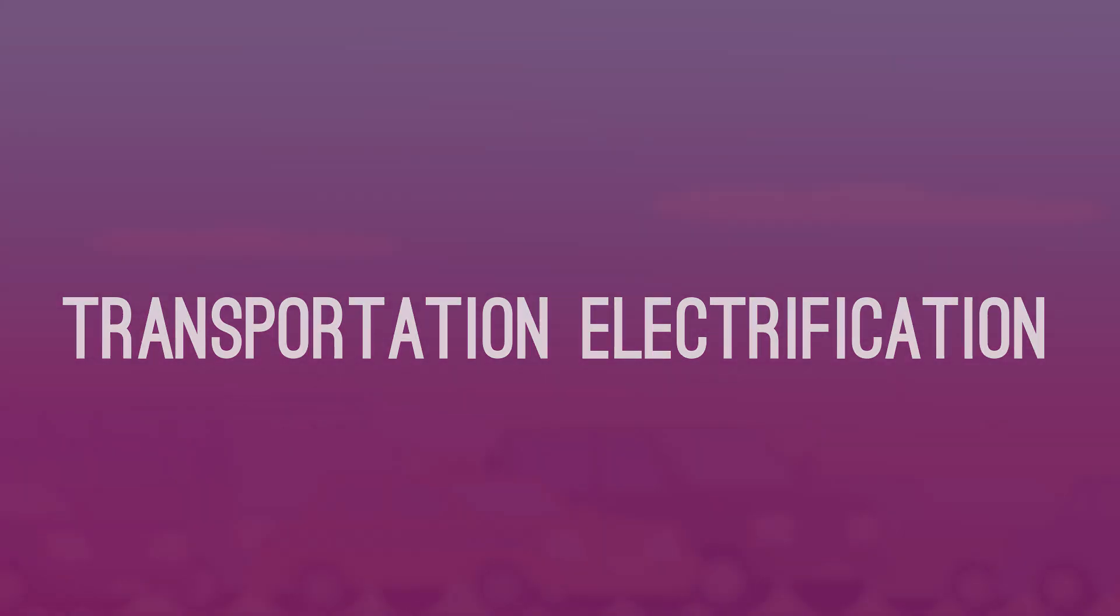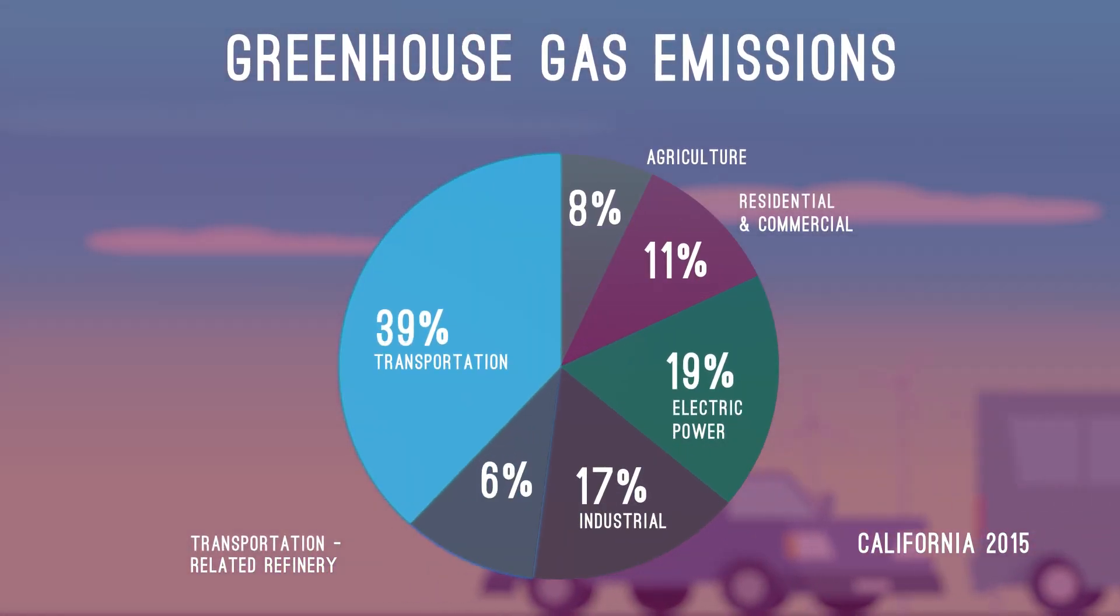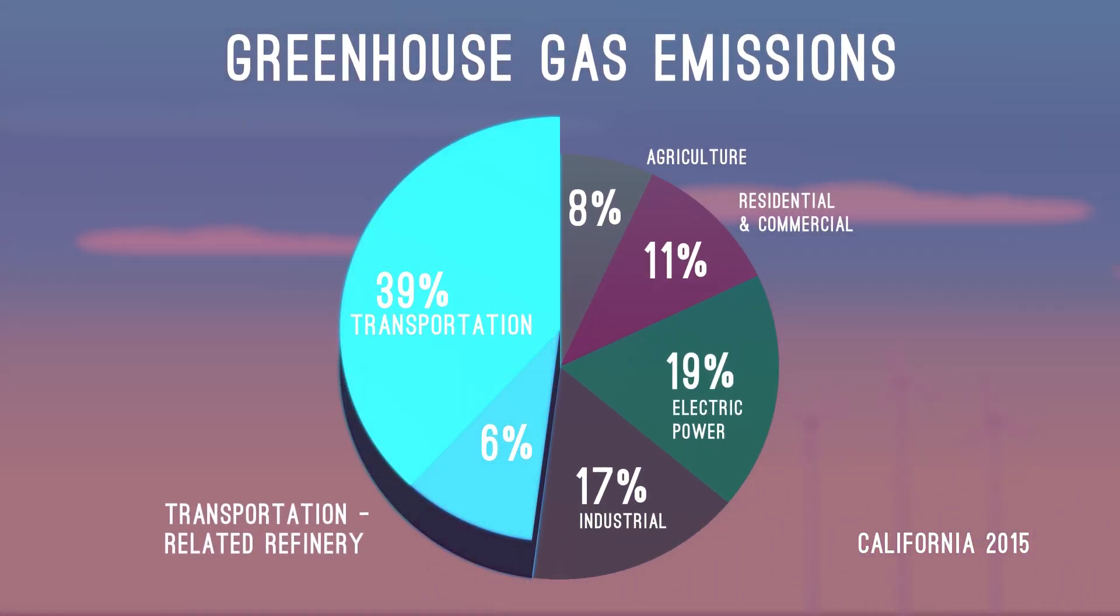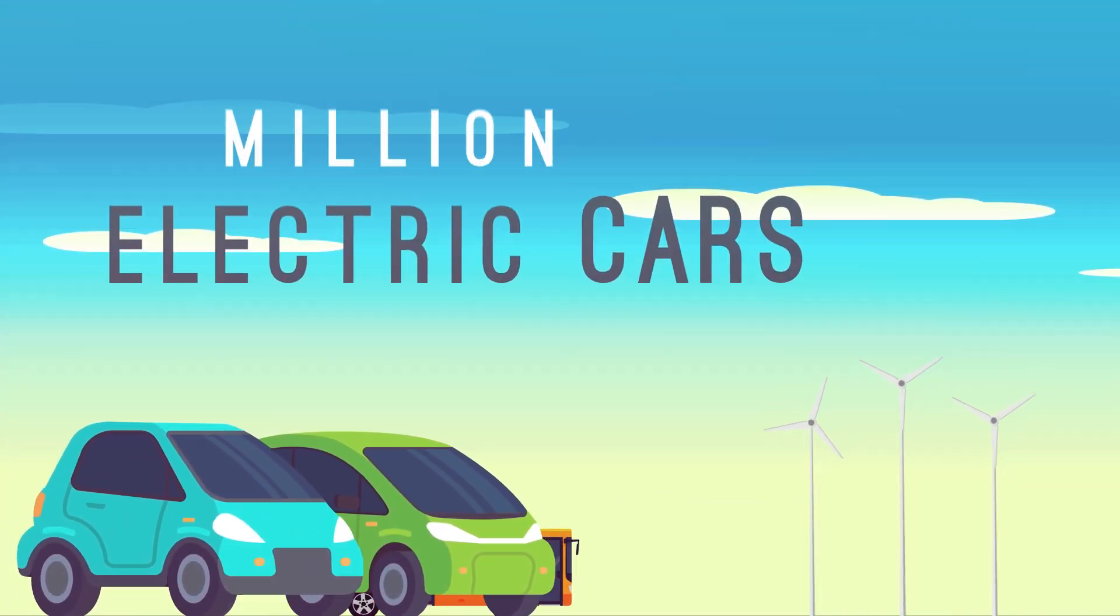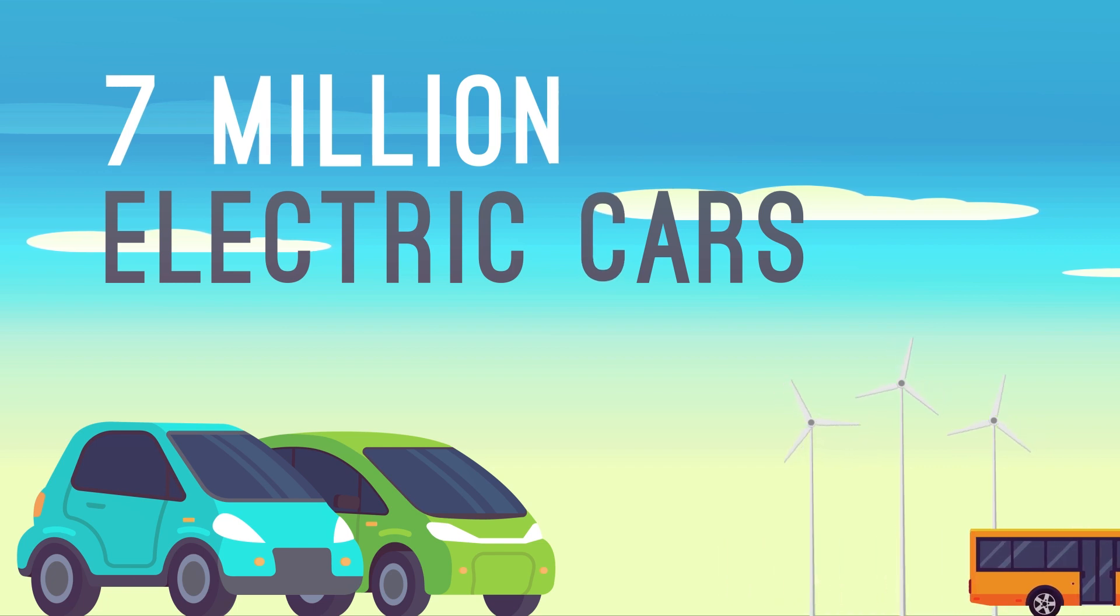Second, this clean power is used to tackle the biggest source of air pollution and greenhouse gases – transportation – fueling at least a quarter of California's cars, as well as trucks, buses and other vehicles.